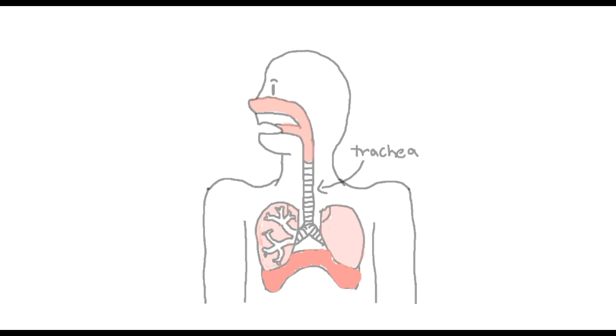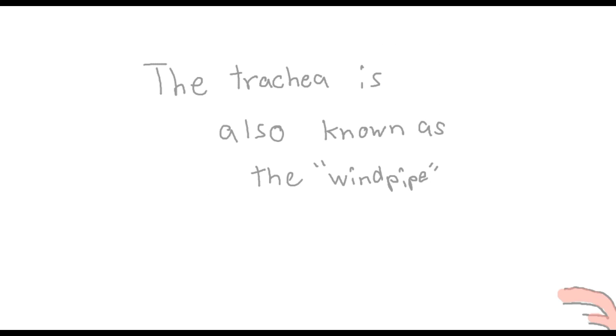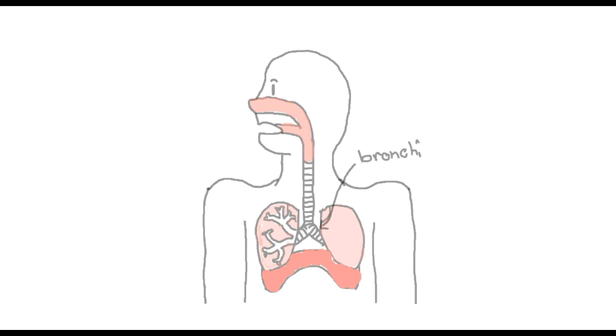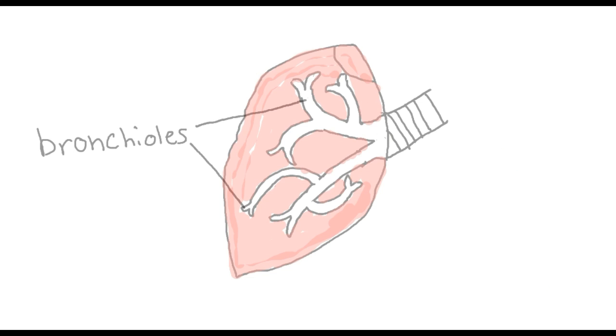The trachea is the second part of the respiratory system. The trachea allows the air to move freely in and out of the lungs, and the trachea is also known as the windpipe. The bronchi is the third part of the respiratory system. The two bronchi branches out of the trachea and enters the inside of the two lungs. The two bronchi then divide into sub-bronchi, called bronchioles.